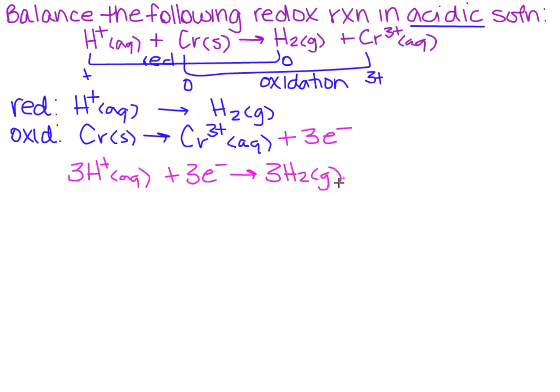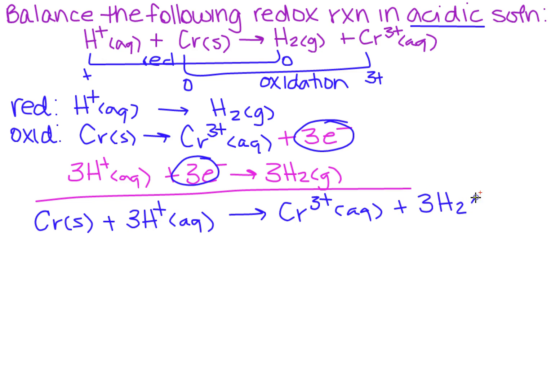So that will cancel out my electrons. Let's add those two equations together and see what we get. So we're going to get Cr solid plus 3H plus aqueous. Remember we said that this term and this term are going to cancel each other out because one's on the left and one's on the right. So that's just going to yield Cr3 plus aqueous plus 3H2 gas.